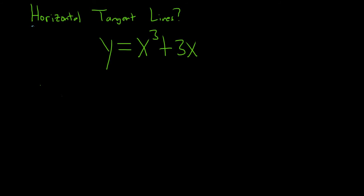So we'll start by taking the derivative and setting it equal to 0. Because if we have a horizontal tangent line, then the slope must be 0. So the derivative is the slope, so the derivative must be 0.